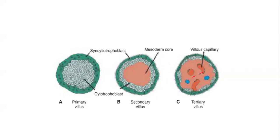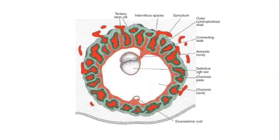As pregnancy progresses, the mesodermal core invaginates into the primary villi, then angiogenesis happens and villus capillaries appear. These three stages of villus development happen simultaneously, resulting in a large number of finger-like projections around the trophoblastic layer.